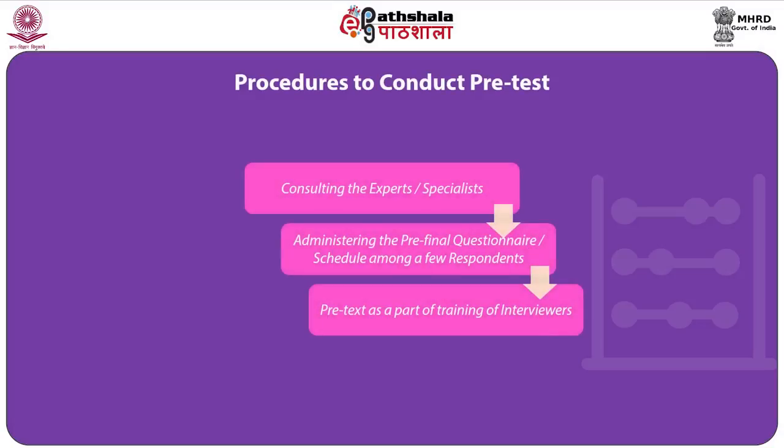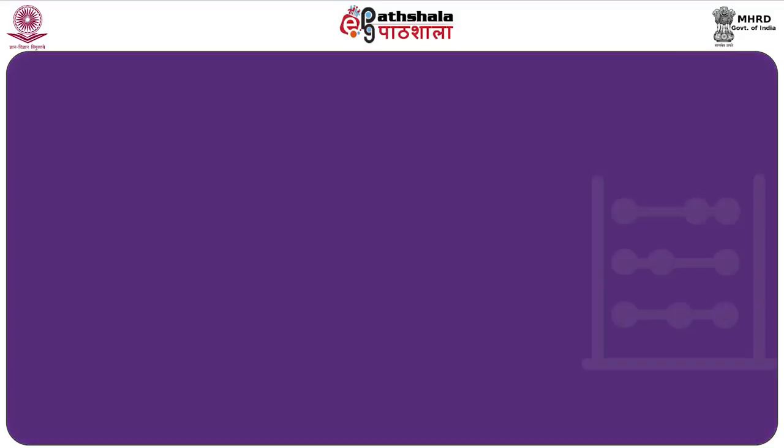This procedure is mostly followed in the schedule prepared to collect data from respondents through large-scale surveys. The second aspect is about administering the pre-test questionnaire or schedule among a few respondents. Here, the researcher will select about 10 to 20 persons similar to the sample respondents and administer the instrument among them. The researchers will try to examine a variety of issues related to the instrument. Steps will be taken to include different types of respondents in the pre-test if there are a variety of respondent types in the final study.